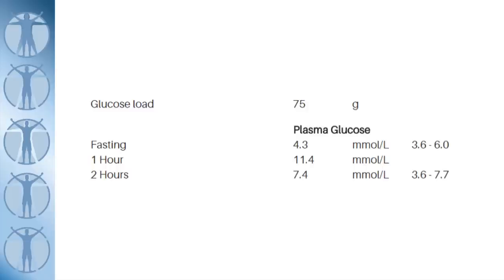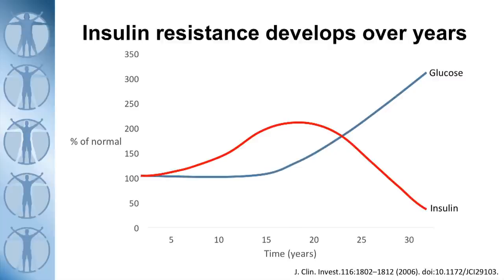We also see elevated one-hour or half-hour blood sugar with a normal two-hour test. A blood sugar of over 11.1 at any time during this test is consistent with a diagnosis of diabetes. If we included the one-hour marker in the standard test, it would be a whole lot more diagnostic. Over a long period of time, insulin gradually rises to compensate for the resistance. But there reaches a point where it can't compensate any longer, and then your blood sugar starts to rise.